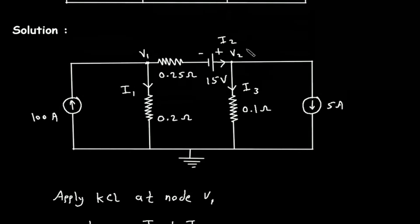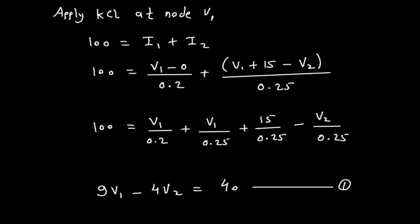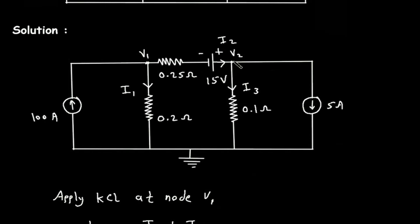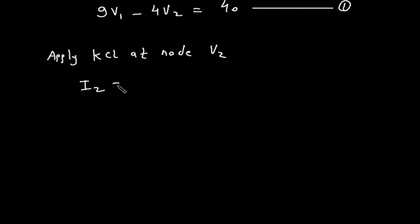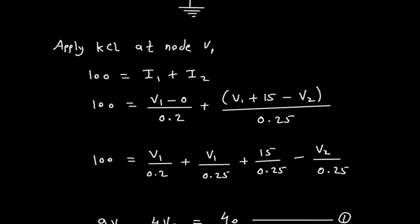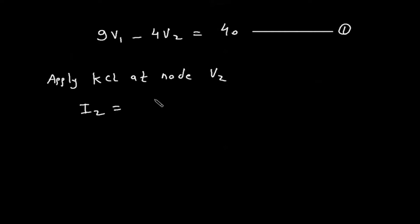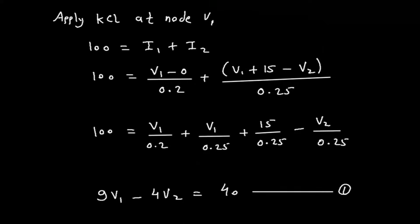Now we will apply KCL at node V2. Summation of all the entering current — the entering current here is only I2 — is equal to summation of all the currents leaving the node. The leaving currents are I3 plus 5. So I2 equals I3 plus 5.